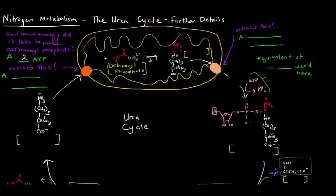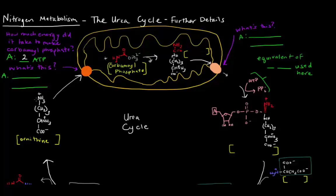In order for this carbamoyl phosphate to move on to the urea cycle, it needs to join with this molecule here, which is called ornithine. Ornithine is an amino acid because it has an alpha carboxyl group, an alpha amino group, an alpha hydrogen, and an R group. You'll notice it wasn't one of the 20 amino acids — that's because it's not a proteogenic amino acid. It's not coded for by the codon table, so it's not incorporated into proteins.